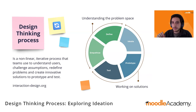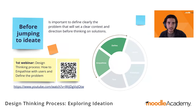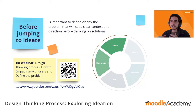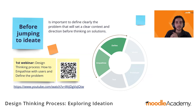After defining the problem we go to the ideation stage, which is what we're talking about today, and then there are two more stages we'll touch on briefly at the end. Before jumping into ideation, it's really important to clearly define the problem, as this sets the course for everyone's thinking. To understand the empathize and define stages in more detail, I recommend watching our first webinar called 'Design Thinking Process: How to Empathize with Users and Define the Problem.'